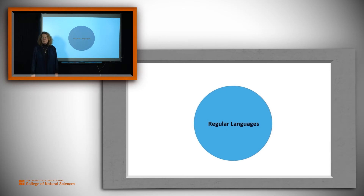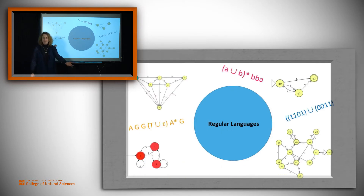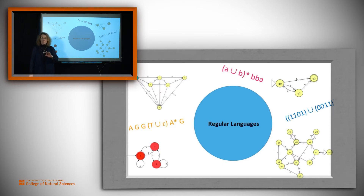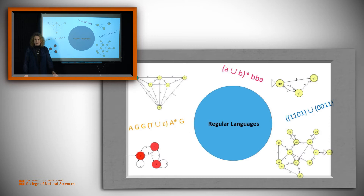The regular languages correspond to a class of problems for which very useful formal tools exist. It's really nice to be able to answer the question: I've got a problem, is it one of these? If it is, you can show that it is by solving it using one of these tools. The question often arises, though, what's this boundary? Do I have a problem that's outside it and I should quit trying to shoehorn it in? How do I show that there isn't one of these things? And the answer is we have a result that helps us.